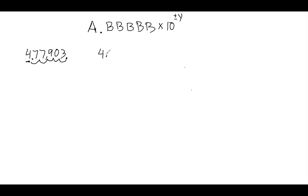So I write out my number as 4.77903 times 10. I moved my decimal point five spaces, so that's my exponent. Now I have to figure out: is my exponent positive or negative? I look at my original number — was it greater than one or less than one? If it was greater than one, your exponent stays positive. 477,903 is definitely bigger than one, so I leave my exponent positive. In scientific notation: 4.77903 × 10⁵.